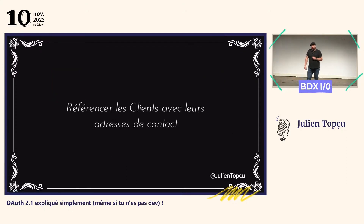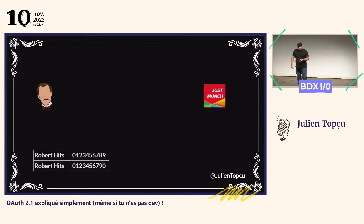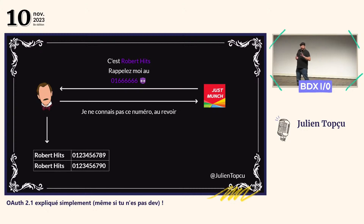Pour corriger ce problème, on s'est dit : « On va arrêter de faire n'importe quoi. » On a décidé de commencer à référencer les clients et leur numéro de téléphone. Maintenant, Gustave maintient un registre qui, pour chacune des entreprises avec lesquelles on travaille, liste les numéros de téléphone de confiance, dont on sait que c'est vraiment eux. Maintenant, si JustMunch se fait passer pour Robert Ritz en disant « Rappelle-moi à ce numéro : 016666 », Gustave va pouvoir vérifier dans son registre si c'est un numéro de confiance. Si ce n'est pas le cas, on ne va pas aller plus loin. Et comme ça, on se prémunit de ce problème d'interception d'authorization code.